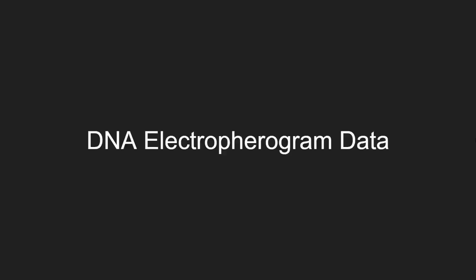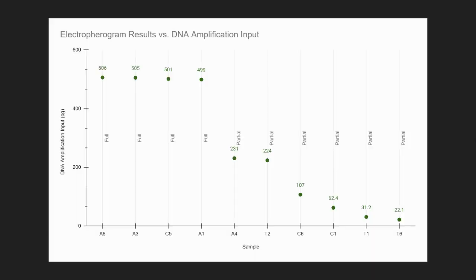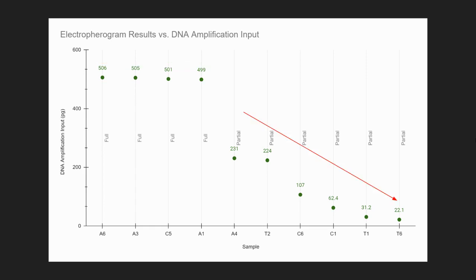Once I completed the screening method, I selected hairs to be used for DNA profiling. From the electropherograms, I concluded that a minimum of about 500 pg of DNA is required from the hair samples to yield a full profile, but low levels of DNA can still generate a partial profile.